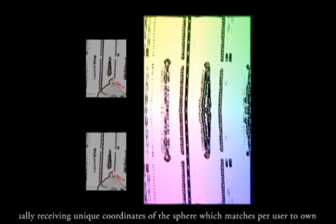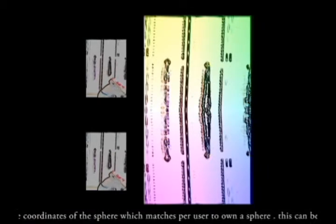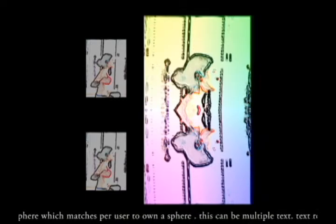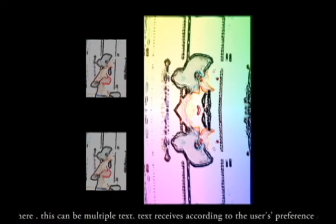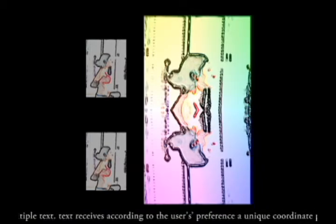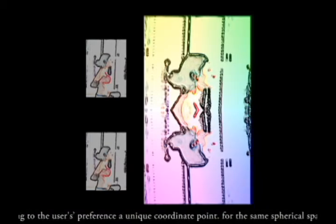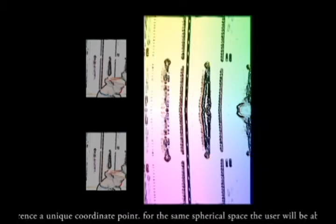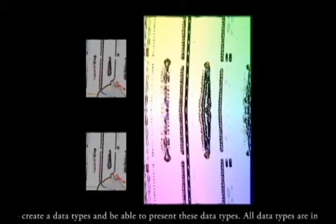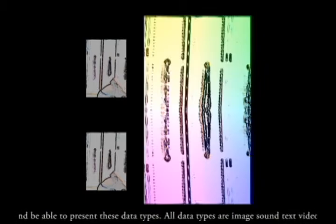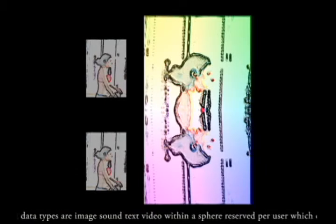The second part of this project is data presentation. The data visualization was part one. Data creation matching to coordinates of a space is on a rougher level. Data is created receiving unique coordinates within a space which matches per user to a sphere.